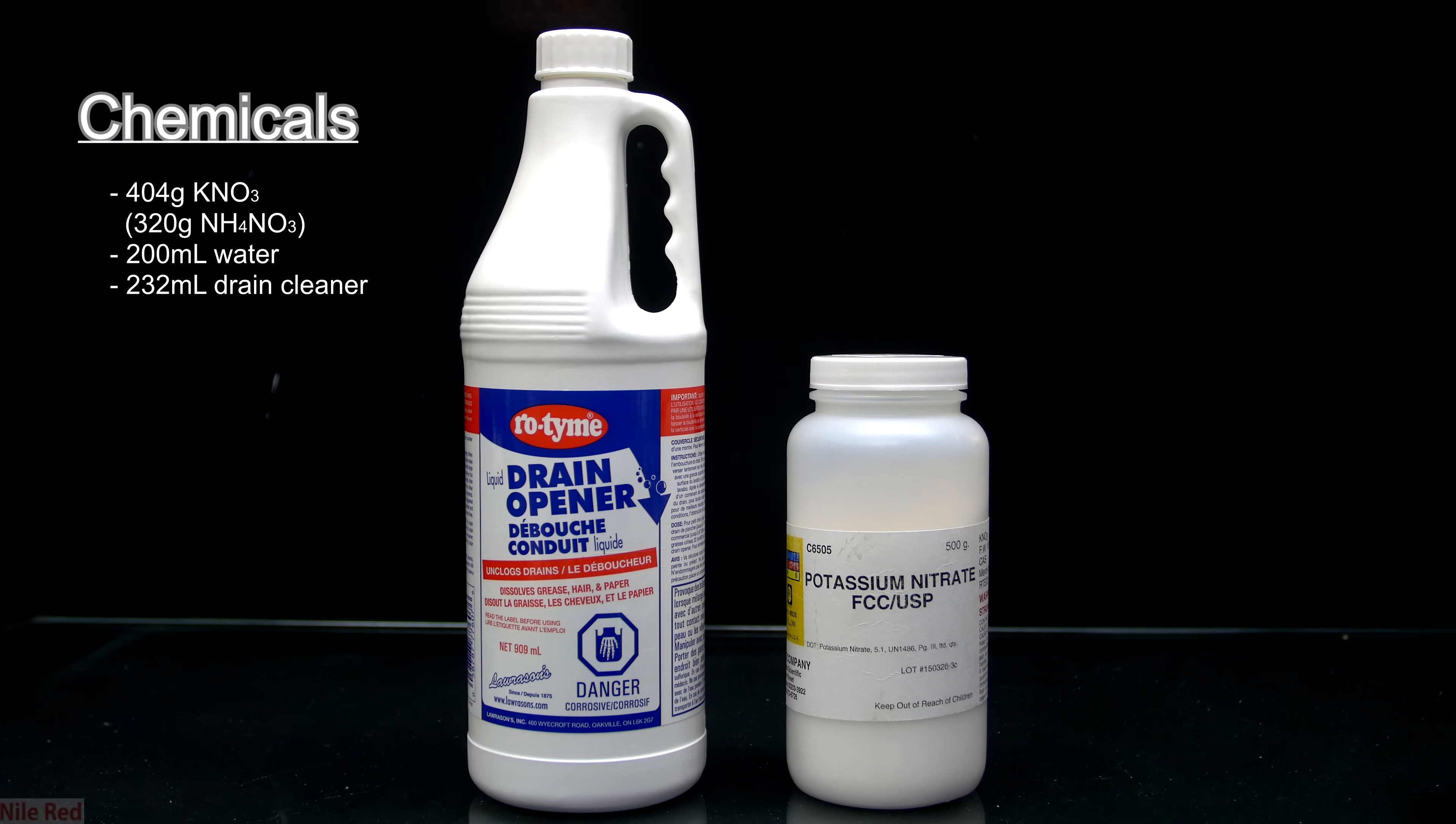Here you can see what I use to make the nitric acid. On the left I just have some sulfuric acid drain cleaner, and on the right I have potassium nitrate. The sulfuric acid drain cleaner can be found in most hardware stores, and you don't need to use potassium nitrate. You can also use any other type of nitrate salt. If you're living somewhere where ammonium nitrate is easily found in instant cold packs, you might want to substitute the potassium nitrate for ammonium nitrate.